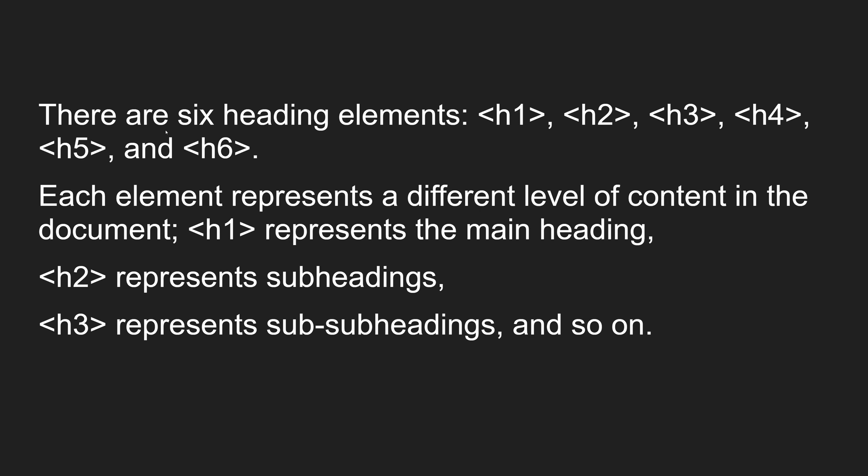There are six types of heading elements present in HTML: h1, h2, h3, h4, h5, and h6. Each element represents a different level of content in the document. h1 represents the main heading, h2 represents the subheading, h3 represents a sub-subheading, and so on up to h6.